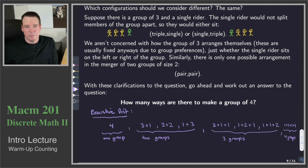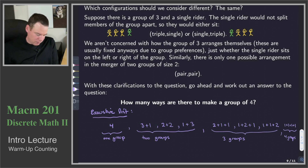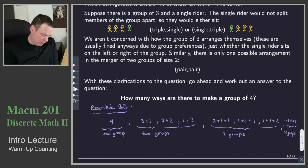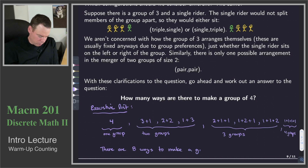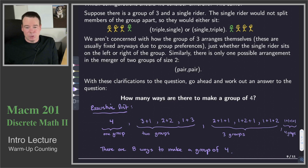There's our exhaustive list of all possible ways we could make a group of four. Now we just count them up: one, two, three, four, five, six, seven, eight. There are eight ways to make a group of four. The problem with this approach is that it is exhaustive — we had to actually list them all.